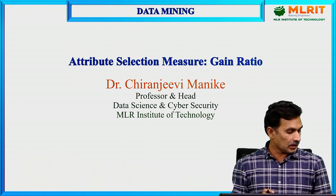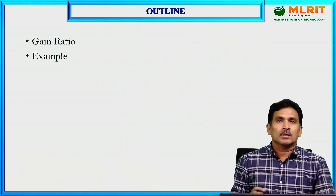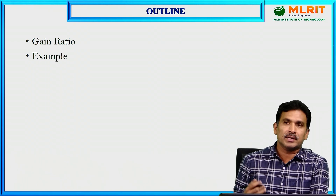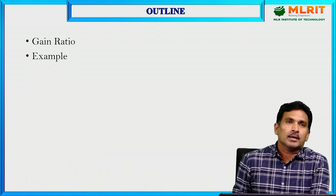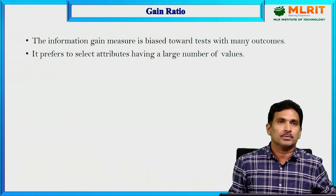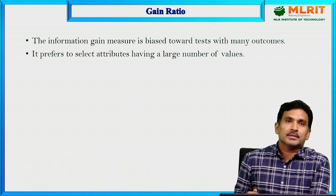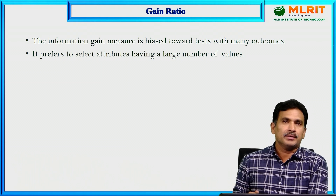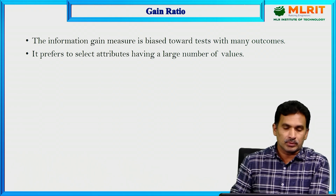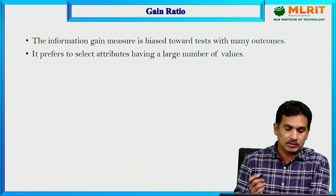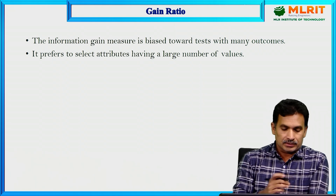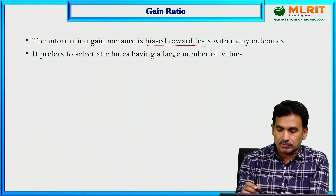In the previous lecture, I already explained information gain. In this lecture, we are going to discuss mainly what is gain ratio, how it is different from information gain, and we will see a numerical example to show how we can use gain ratio. The problem with information gain is its bias towards tests with many outcomes.